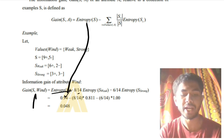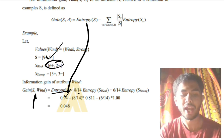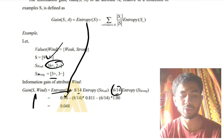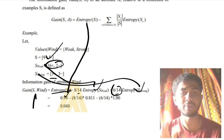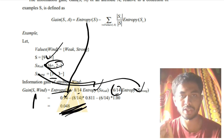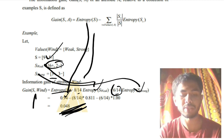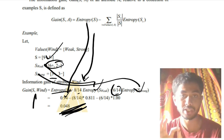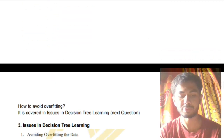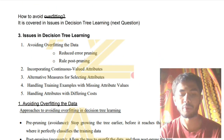We calculate Gain(wind) with respect to S. Entropy of S is already calculated as 0.94. Then 8 divided by 14 (since 6+2=8, total is 9+5=14) times entropy of the weak subset, plus 6 divided by 14 (since 3+3=6) times entropy of the strong subset. The lesser the answer, the purer the dataset; the higher the answer, the more impure. The full worked example is in the theory video. The third question — avoiding overfitting — is discussed in the next question.